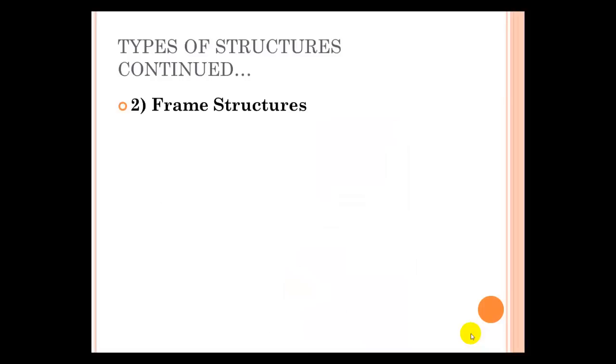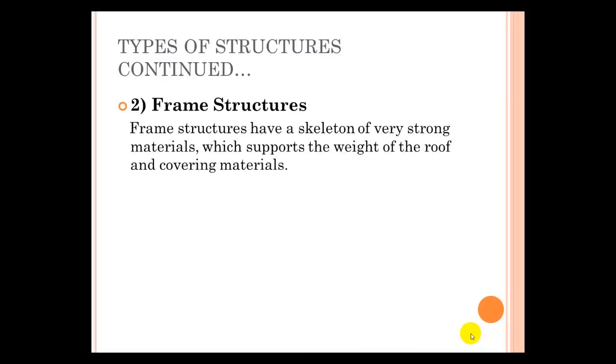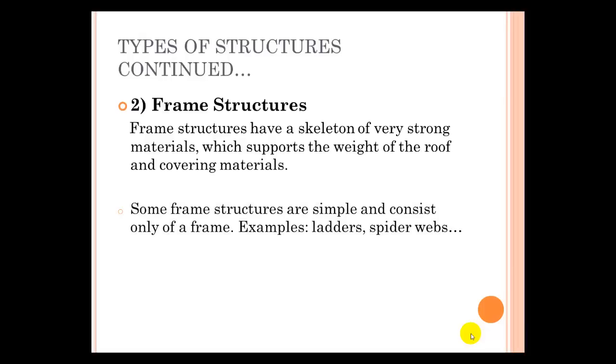The second type of structure that we're going to be talking about for Science 7 are frame structures. Frame structures have a skeleton of very strong materials. The skeleton supports the weight of the roof and of the covering material. Some frame structures are simple, and only have a frame, and these include things like ladders and spider webs.